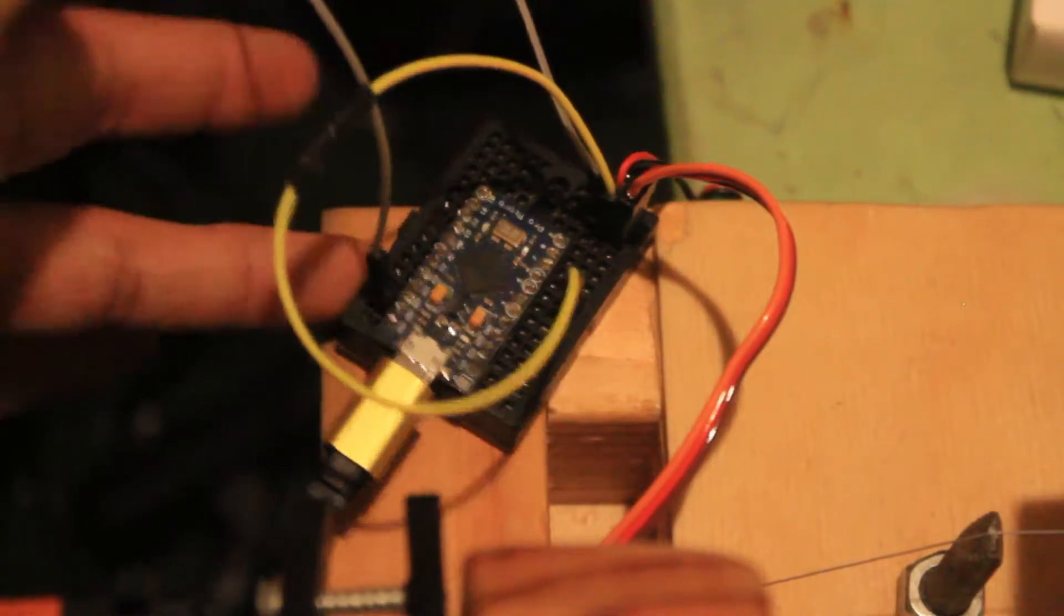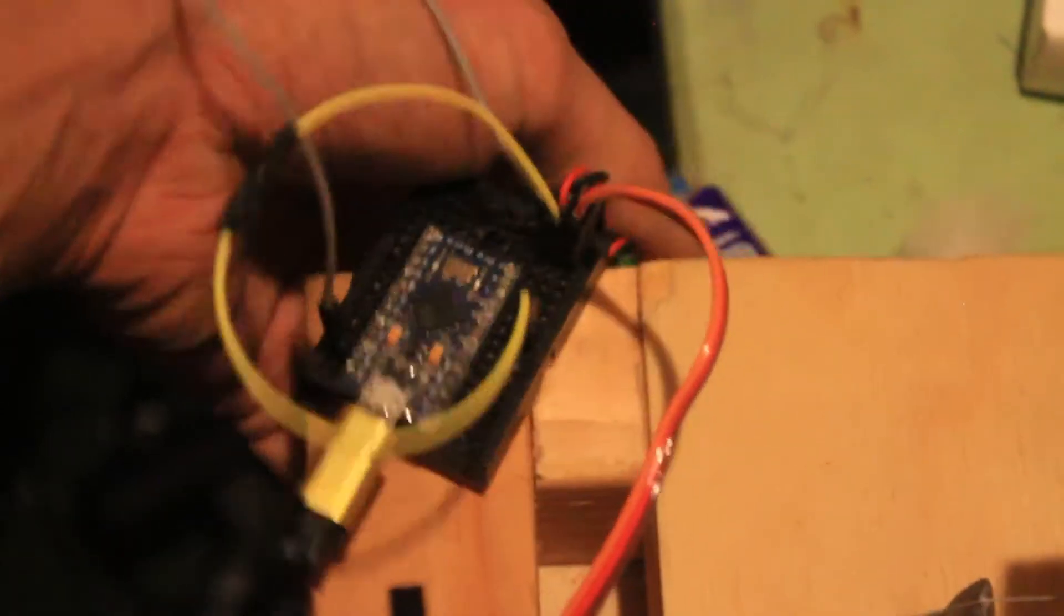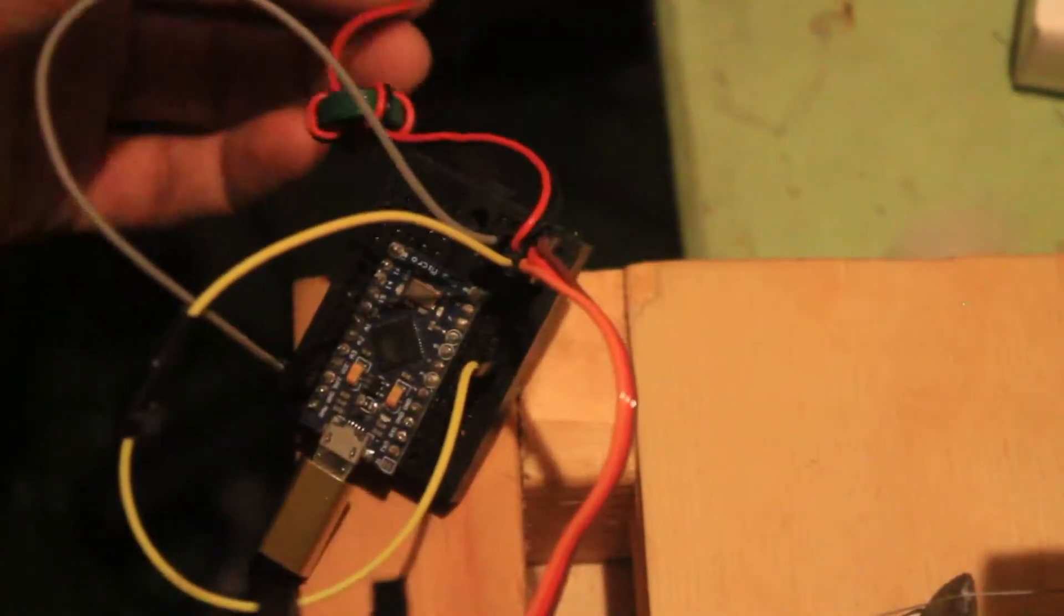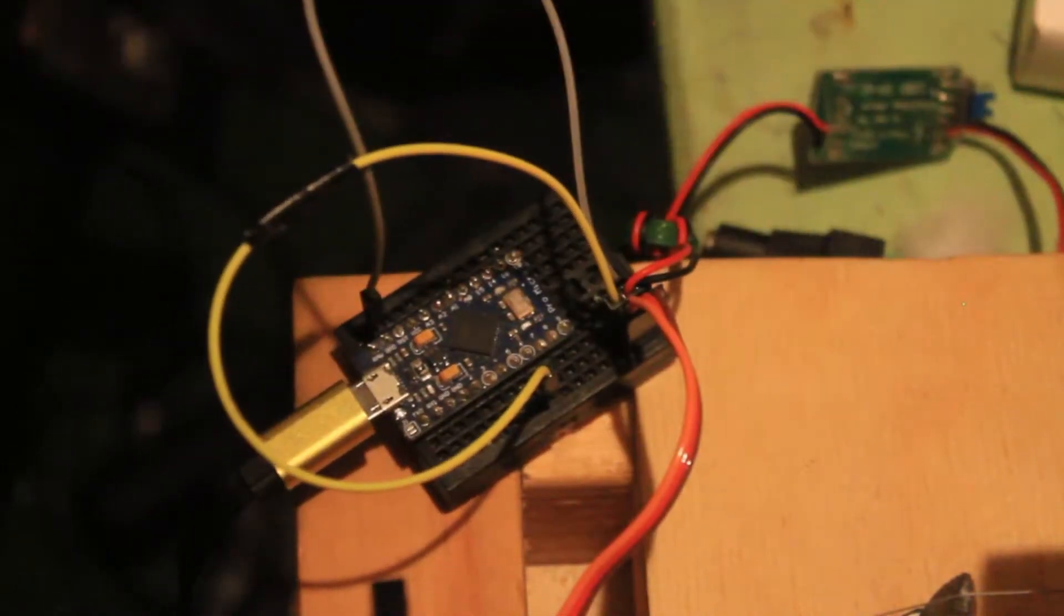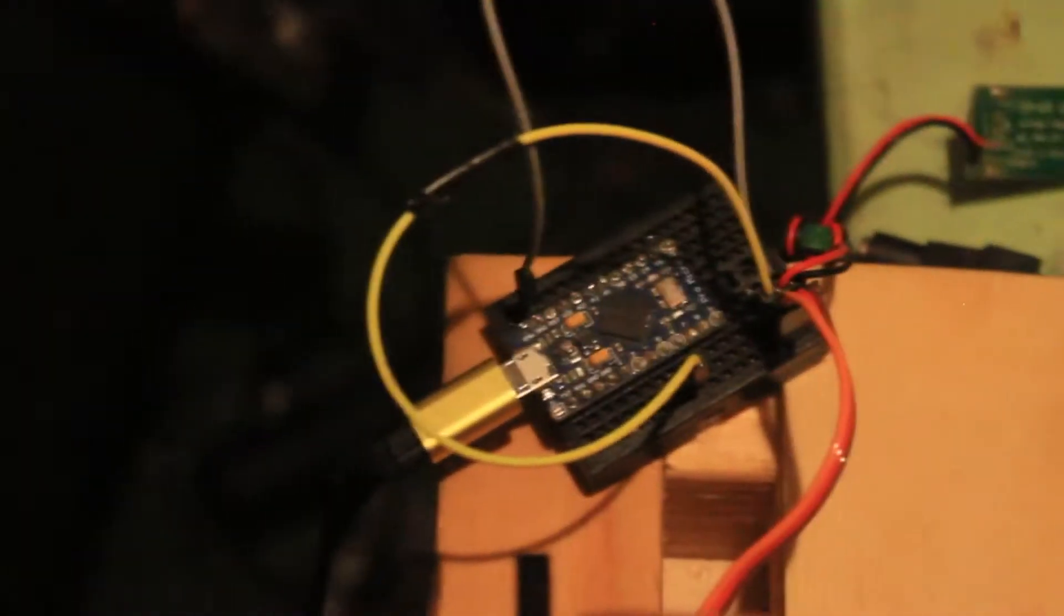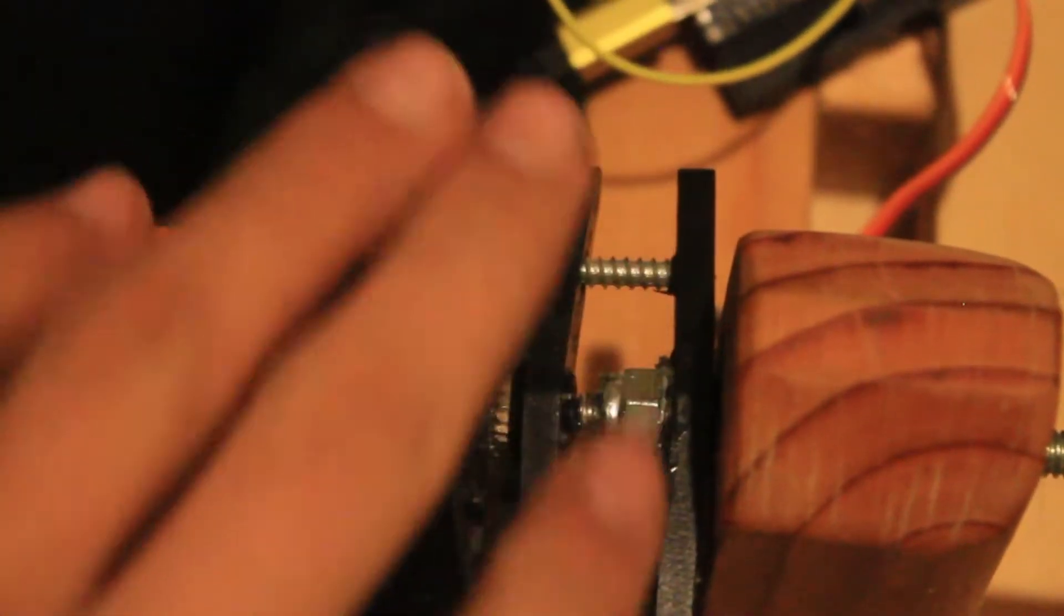So right here I have a Pro Micro. It's powered by USB because the raw input apparently fries it on 12 volts. So the UBEC converts 12 volts into 6 volts for this high torque servo right here. I have the high torque servo attached to the motor.